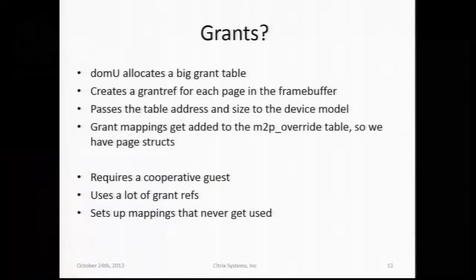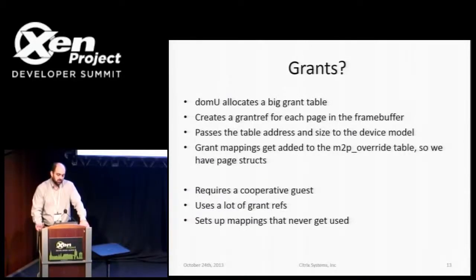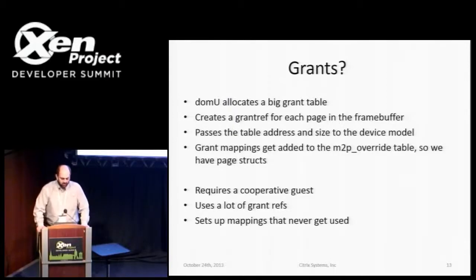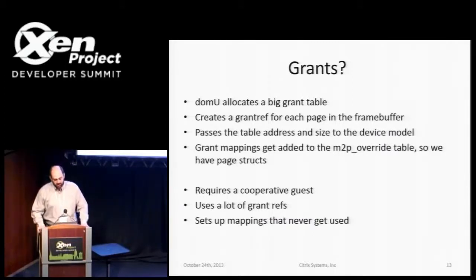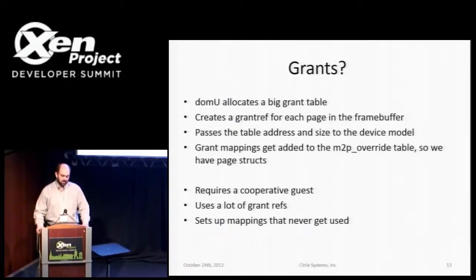The grant mechanisms in Xen work around that. You could use grant tables: code in DomU allocates a big grant table, creates a grant reference for each page in the linear frame buffer, transfers the grant references to Dom0, and inside the grant code there's an M2P override which takes a struct page in the kernel and overrides the machine address so lookups return the correct address. But there are caveats: you need a cooperative guest, and ideally you want to do this without a PV video driver in the guest. It also inflates the size of your grant tables and sets up virtual mappings that nobody ever looks at, since pages in a GEM object are resolved through the graphics aperture rather than virtual addresses.